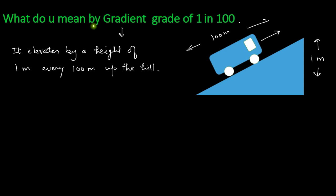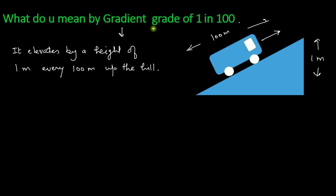If the gradient were mentioned as a downgrade of 1 in 100, it would mean the train descends by a height of 1 meter after every 100 meters down the hill. This is how gradient will be mentioned in the upcoming numericals.